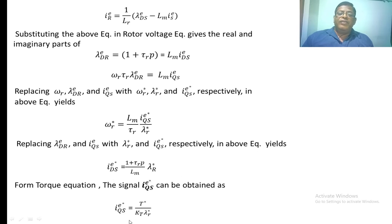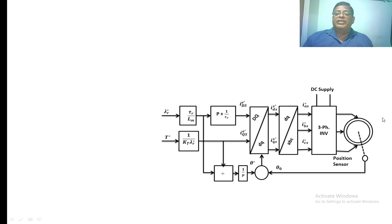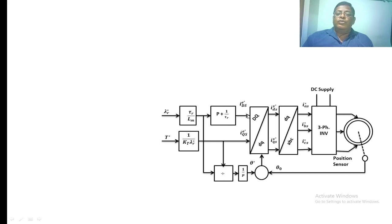From the torque equation, i_qs_e_star equals the reference torque divided by k_t multiplied by the reference value of the rotor flux. In the indirect method, the rotor flux reference and torque reference are taken as inputs. The flux reference is multiplied by (tau_r / L_m) and by (p + 1/tau_r) to give i_ds_e_star, the reference value of the d-component of stator current. The reference torque is multiplied by (1 / (k_t * lambda_r_star)) to give i_qs_e_star.